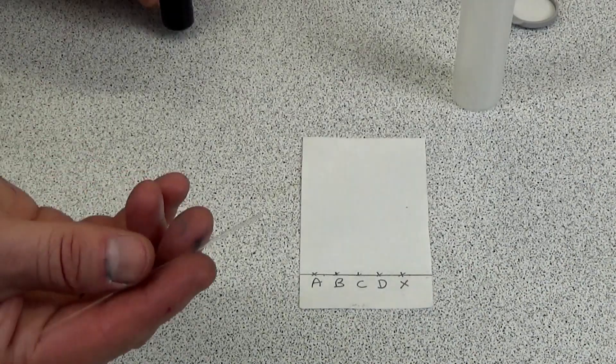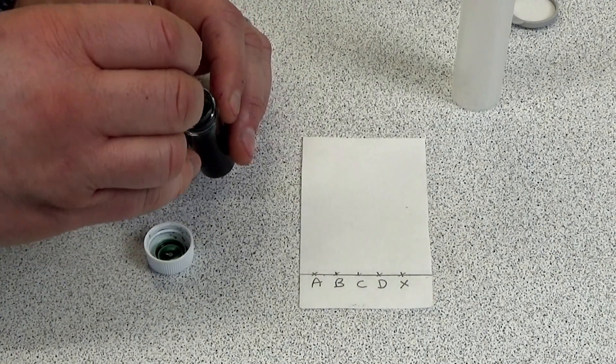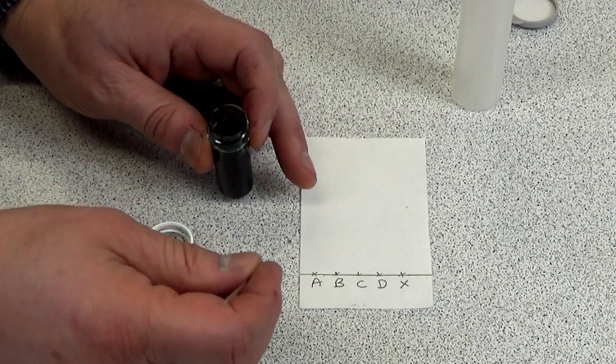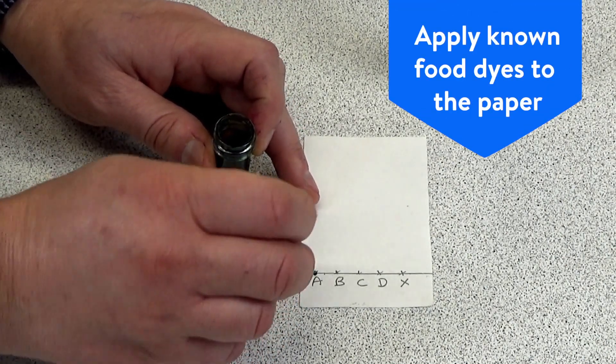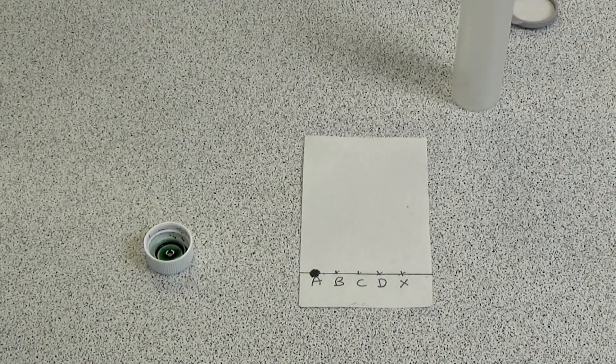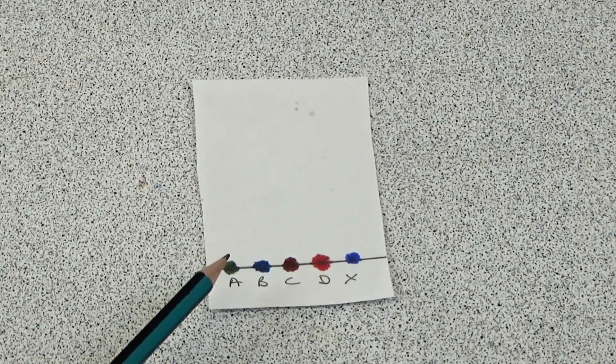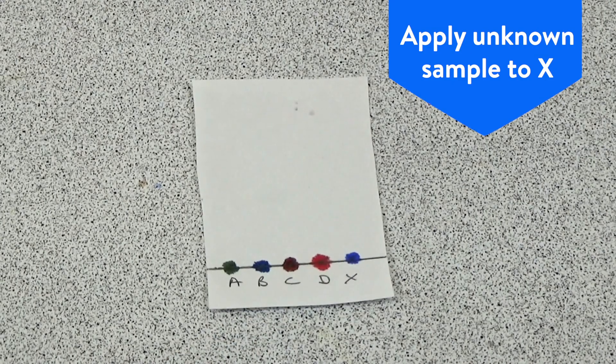We then dip the end of a capillary tube into the first known food dye so that it draws a small amount up the tube and then we dab it onto the first known sample so that we get a small spot. We then let that dry and repeat the process to make the spot more concentrated. We then repeat the process for the other known samples and the unknown sample marked X.